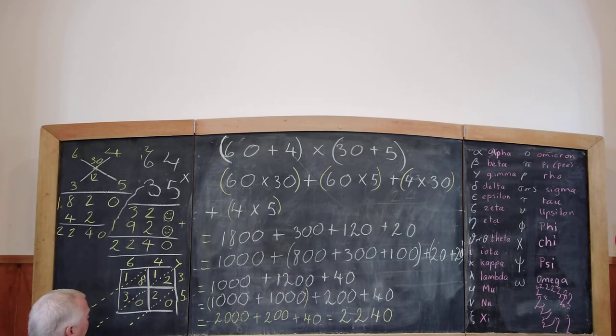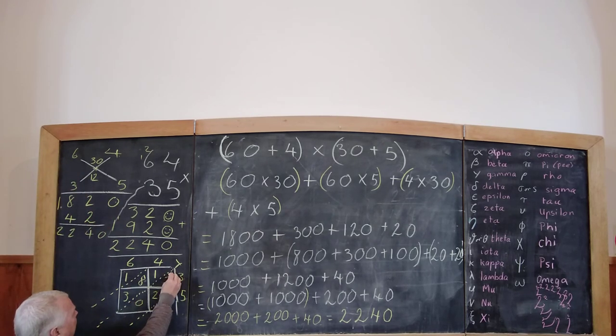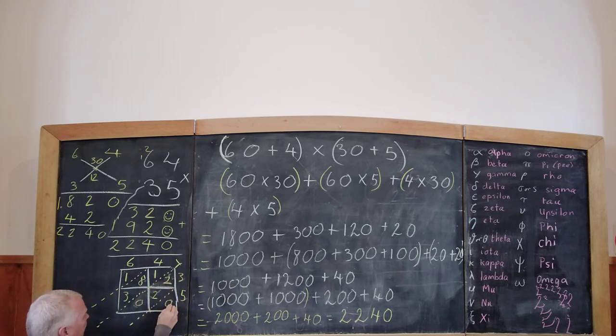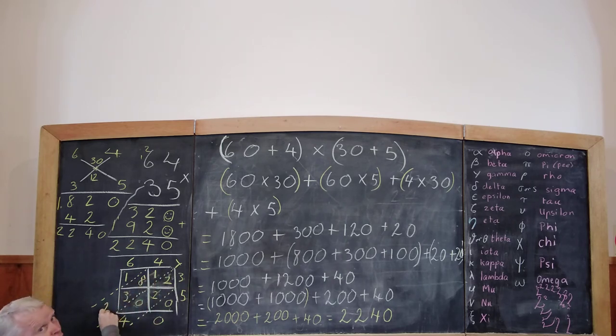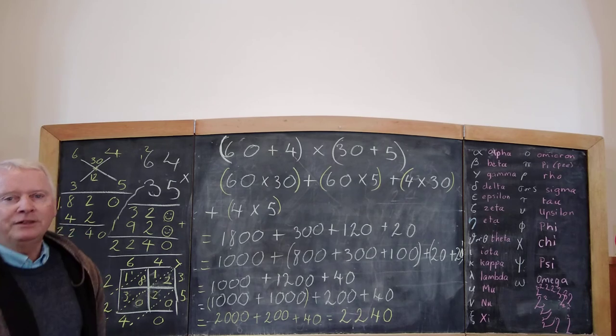Then, we have to add these ones. But first, whatever's in this triangle here comes down. So that's a 0. 2 plus 2 plus 0, that's 4. These 3 triangles both form a family. 1 plus 8 is 9. Plus 3 is 12. Put the 2. Carry the 1. 1 plus 2. So it's 2000.